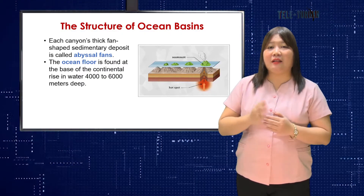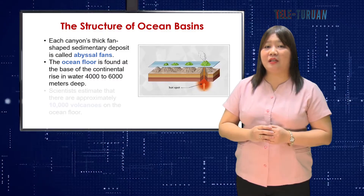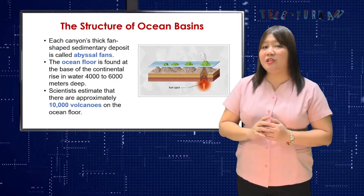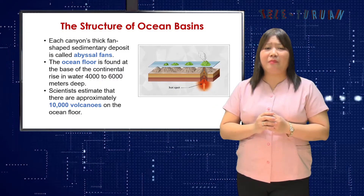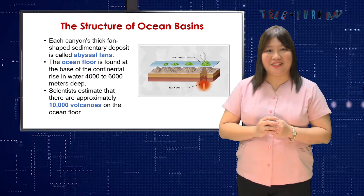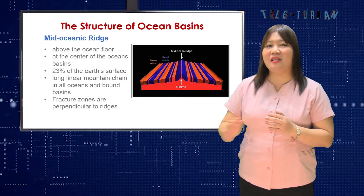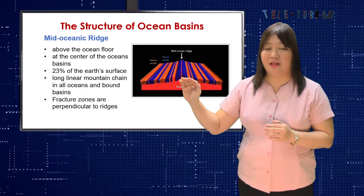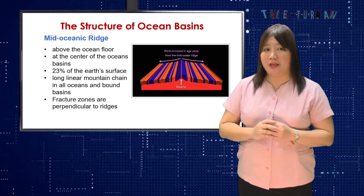The ocean floor is found at the base of the continental rise in water 4,000 to 6,000 meters deep. Numerous volcanoes populate the floor of the ocean basins, and scientists estimate that there are approximately 10,000 volcanoes on the ocean floor. The mid-ocean ridge is normally found rising above the ocean floor at the center of the ocean basins and constitutes 20% of the Earth's surface.